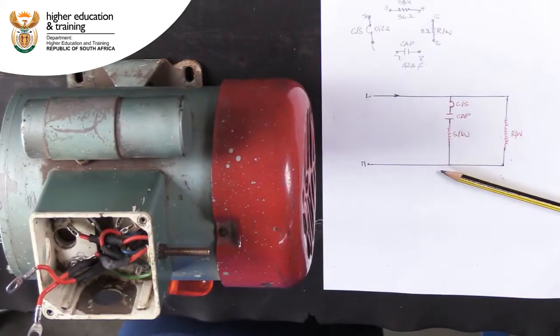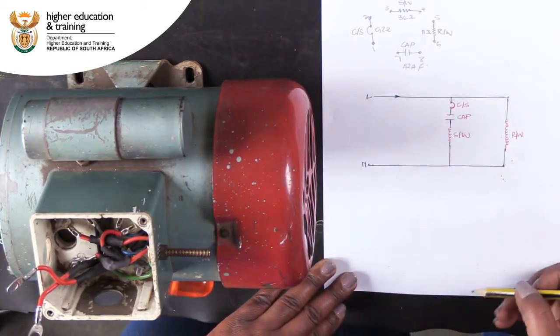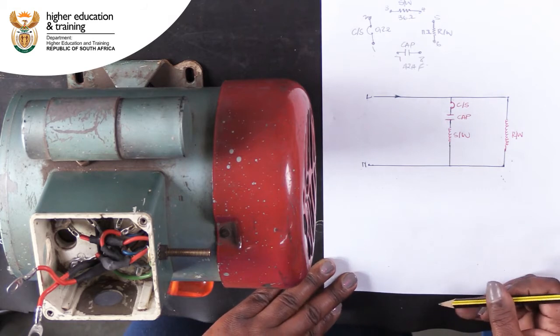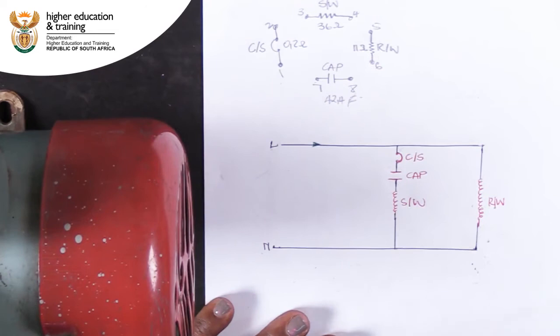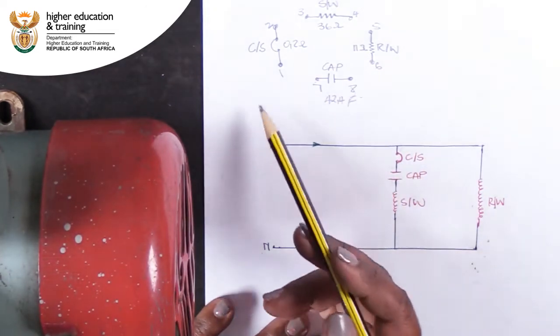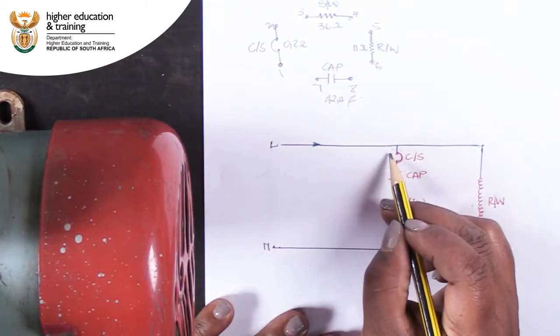Now that we have a schematic, we can use it to determine how to connect this motor to a supply. The first thing to do is to number the posts on our schematic. We know that the centrifugal switch is between points 1 and 2. We indicate these on our schematic.